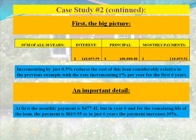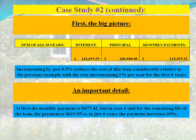Case study number two continued — the big picture. The sum of all 30 years' interest payments equals $118,055.59. The sum of all principal is, of course, $100,000, and the sum of all monthly payments is $218,055.92. Incrementing by just 0.5% reduces the cost of this loan considerably relative to the previous example with the rate incrementing 1% per year for the first six years. At first the monthly payment is $477.42, but in year six and for the remaining life of the loan, the payment is $619.95. So in just six years, the payment increases 30%.